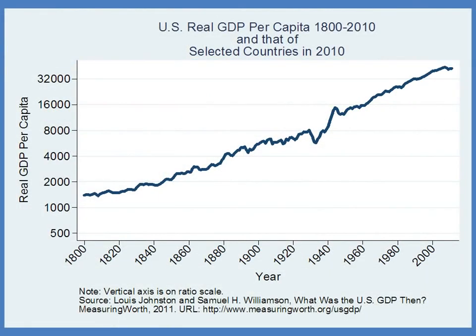Why is the United States so much richer than these other countries? The most basic reason is that the United States has grown consistently for a very long period of time. This graph shows real GDP per capita over the last 210 years, from 1800 to 2010, graphed on a ratio scale where the vertical axis shows doublings—1000 to 2000, 2000 to 4000, and so forth. A straight line on this graph represents a constant growth rate.